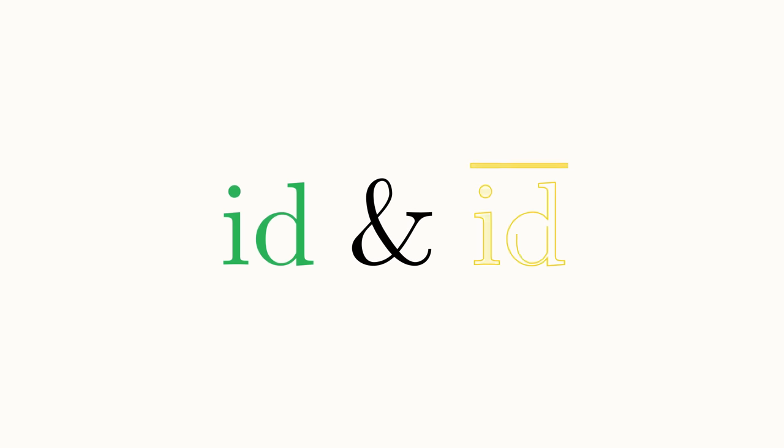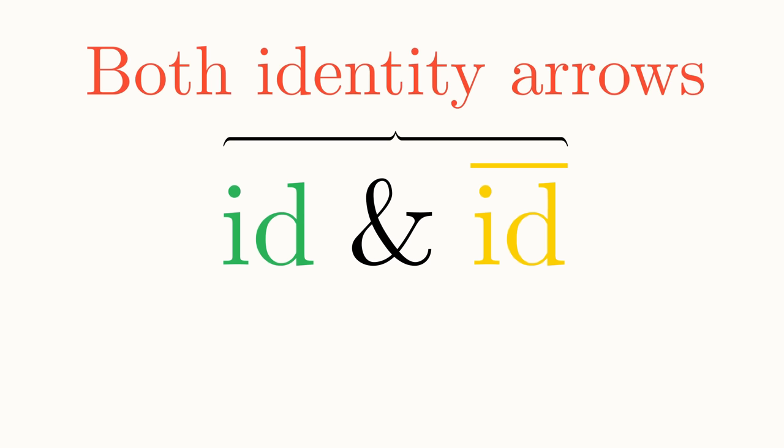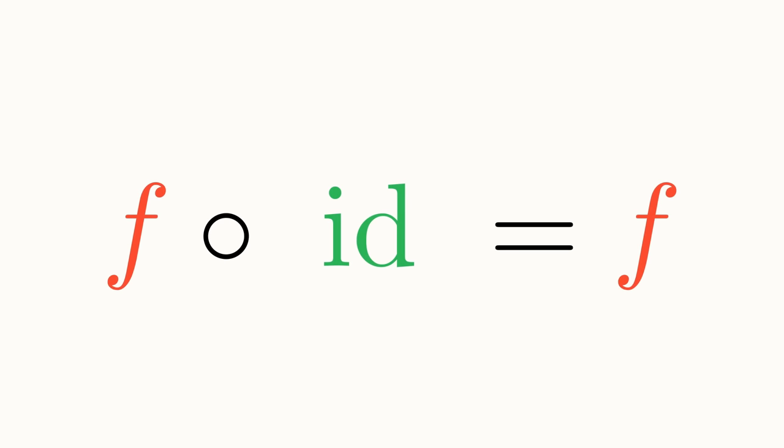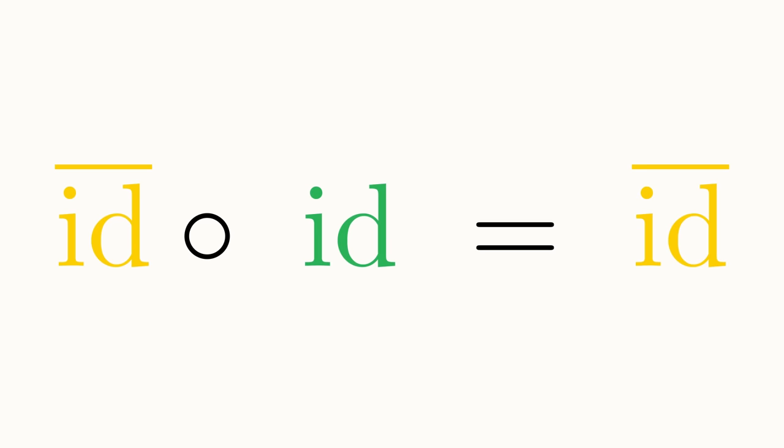Well, suppose there were indeed two identity arrows for some object in a category, with the other identity arrow being denoted ID with a bar on the top. By definition of the identity arrow, any given arrow that starts at this object, let's call it F, when composed with our identity arrow must give exactly the same arrow. Since this must be true of any arrow that starts at our object, it must also be valid for our second identity arrow, as this both starts and ends at this object.